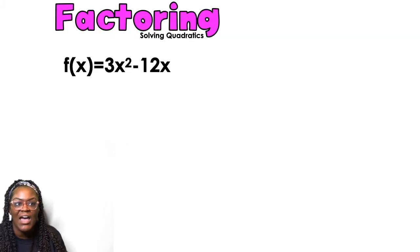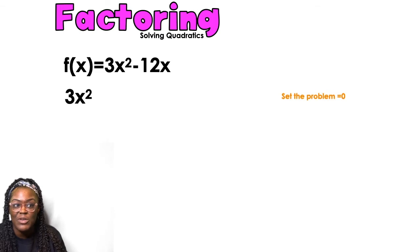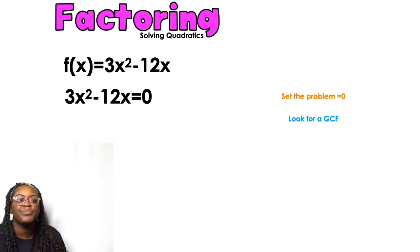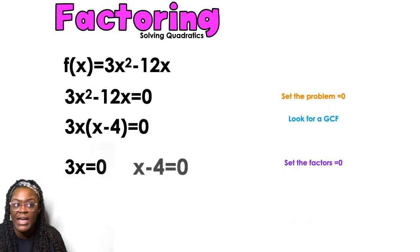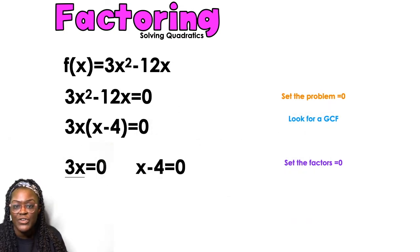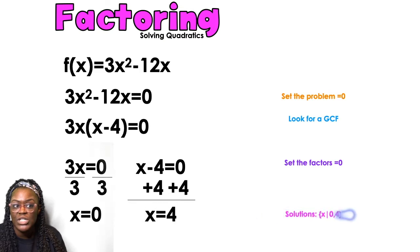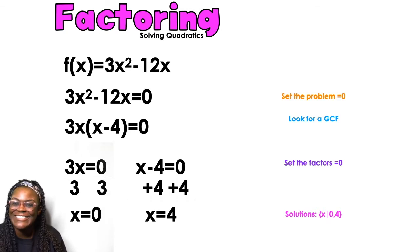Example one: f(x) = 3x² - 12x. Set the problem equal to zero. Look for a GCF — always look for a GCF. The GCF is 3x, so we get 3x(x - 4) = 0. Set each factor equal to zero: 3x = 0 gives x = 0; x - 4 = 0 gives x = 4. Solutions: {x = 0, x = 4}.